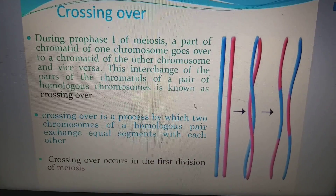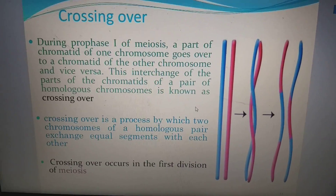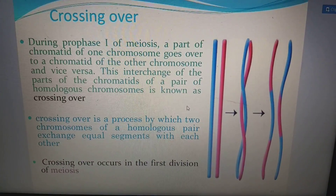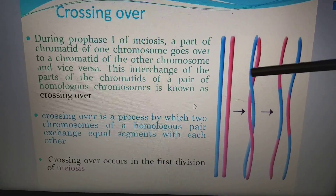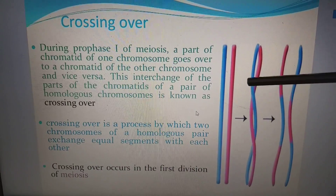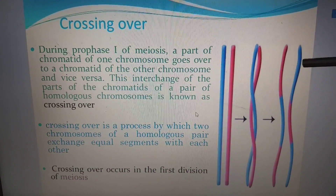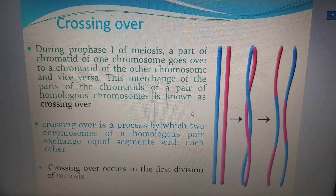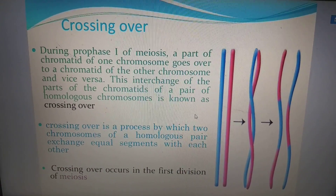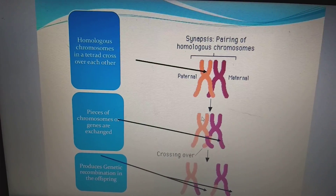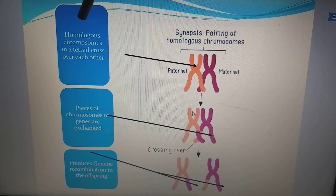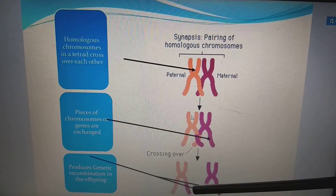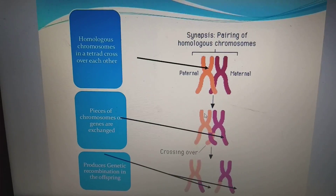Crossing over: during prophase I of meiosis, a part of a chromatid of one chromosome goes over to a chromatid of another chromosome or vice versa. This interchange of parts of chromatids of a pair of homologous chromosomes is known as crossing over. Before crossing over, after crossing over, and the resulting exchange of chromatid material can be seen in diagrams. Crossing over is a process by which two chromosomes of a homologous pair exchange equal segments with each other. Crossing over occurs in the first division of meiosis, and it is the basis for genetic variation.